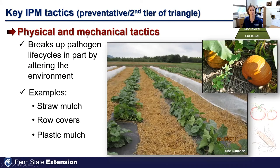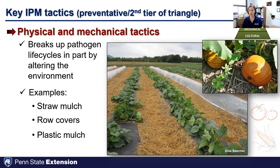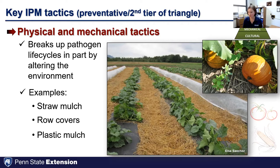We also implement physical and mechanical tactics to break up pathogen life cycles by altering the environment. Using straw mulch between rows, row covers to exclude cucumber beetles for managing bacterial wilt, and plastic mulch helps reduce splashing of soil onto plants. There's a lot of reduced-till and no-till pumpkins and cucurbits being planted, and this physical mulch barrier between soil and fruit can do a lot to reduce fruit rots and keep fruit cleaner before it goes to market.